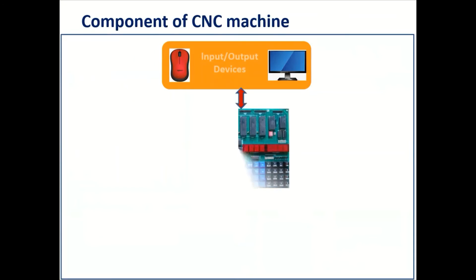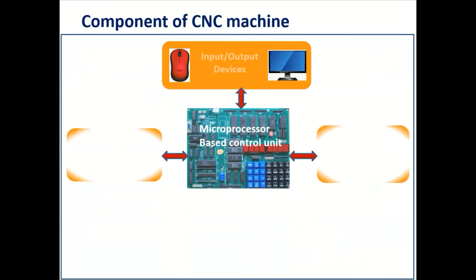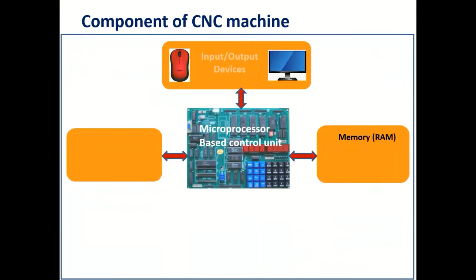The second component is the machine control unit, in which the microprocessor is used. This controller takes input from the input/output device, as well as feedback from the feedback units, and activates the various drives and the machine tool components — the spindle, table, motor driver, etc. There are two types of memory used: RAM — random access memory — and ROM — read only memory.